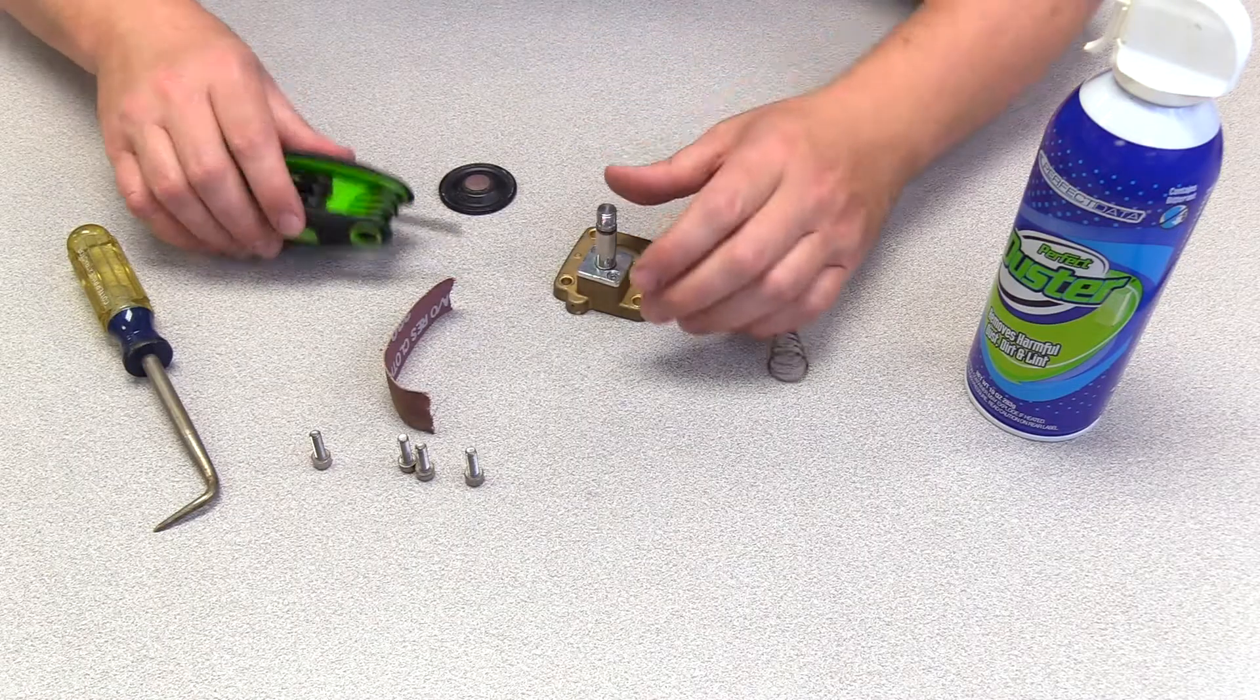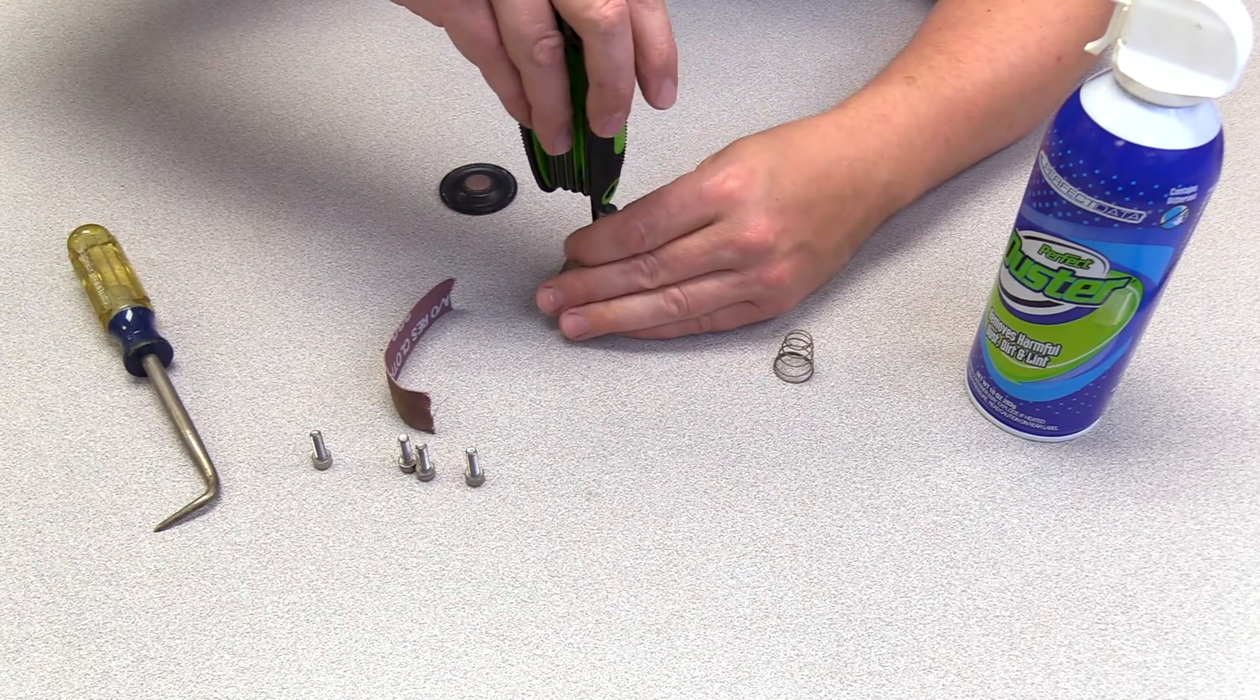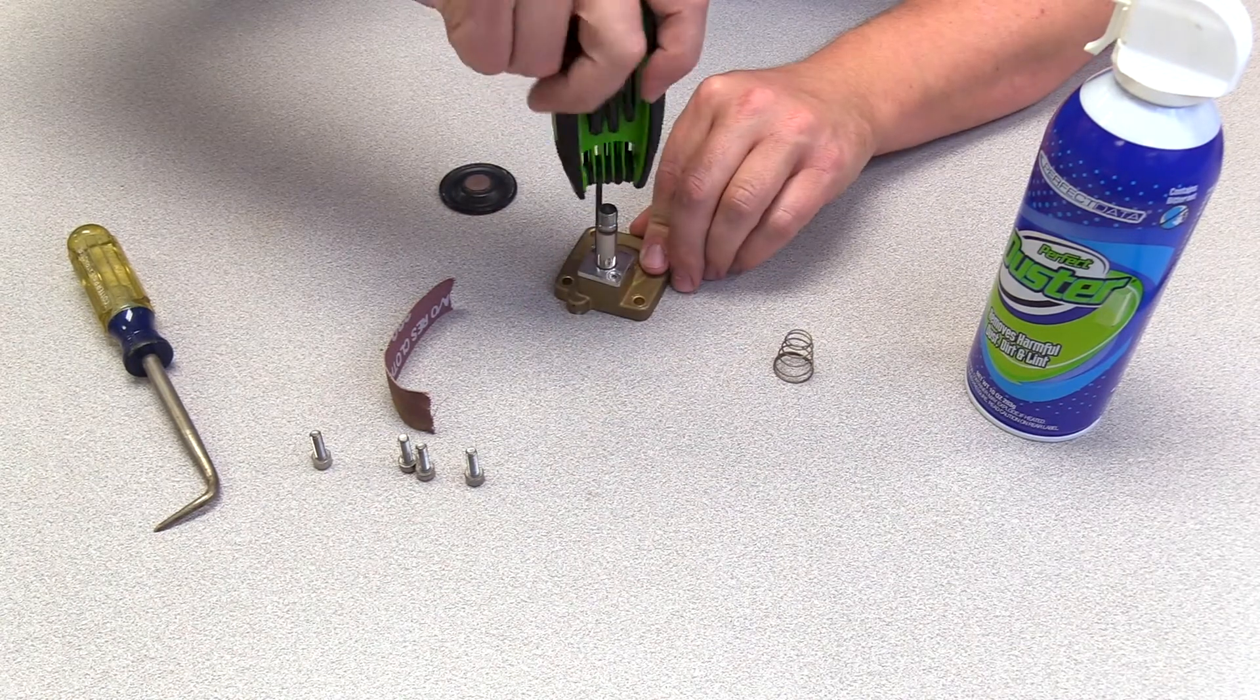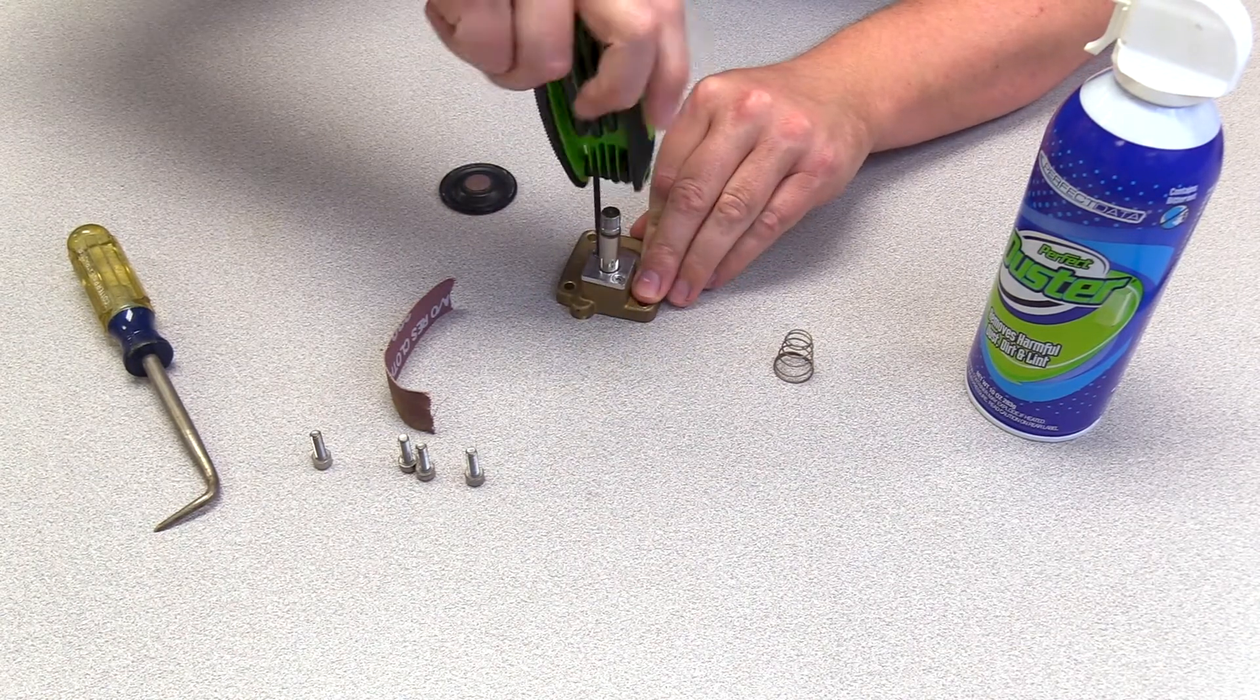Use a T10 Torx wrench to remove the two screws that hold the coil stem to the valve top. Set aside parts.